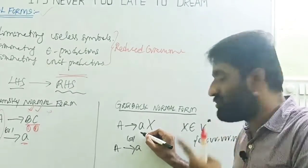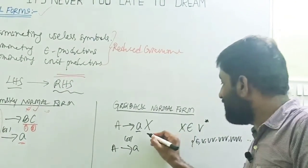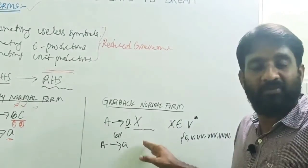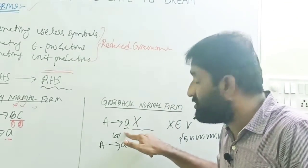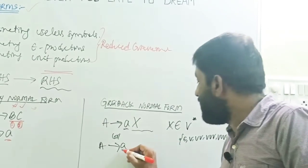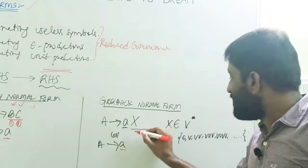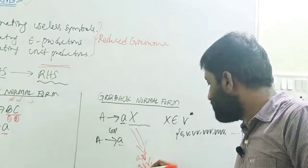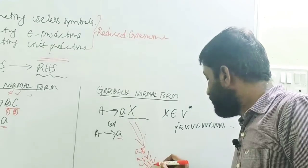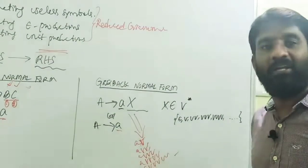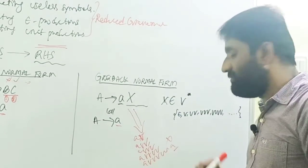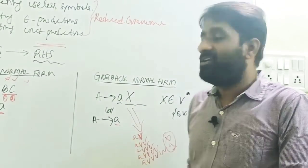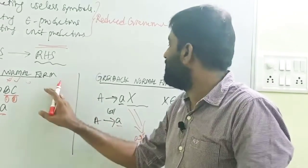In GNF, we are not restricting the length of the RHS, but we are restricting the position of symbols. The RHS must start with a terminal only, followed by any number of non-terminals — you can have a hundred non-terminals, no problem. But the production must start with a terminal only. In between, variables are not allowed — only at the end.